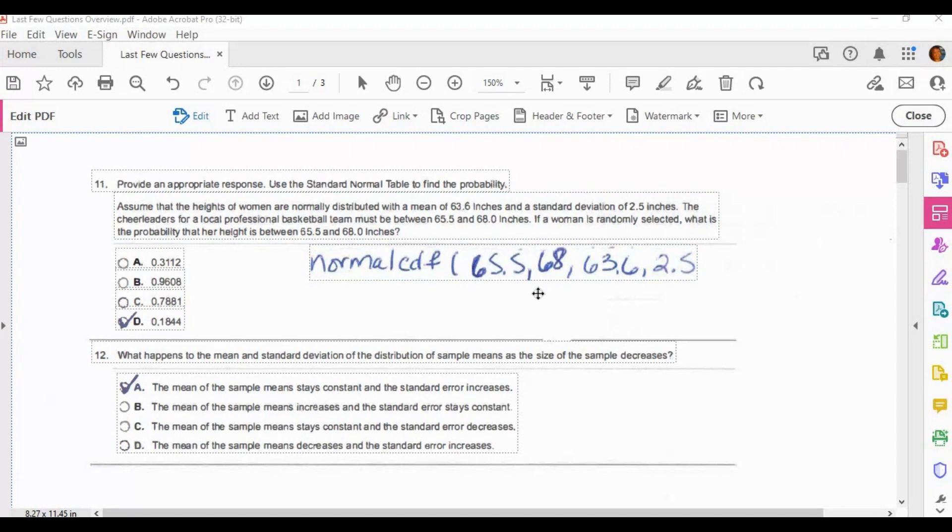We just need to put in our lower bound as the lower number that they gave us, the 65.5 and the upper bound of 68. And we put in our mean as the mean that they gave us, the 63.6 and the standard deviation of 2.5. And when we do that, we get the answer of D, 0.1844. So that is pretty straightforward.